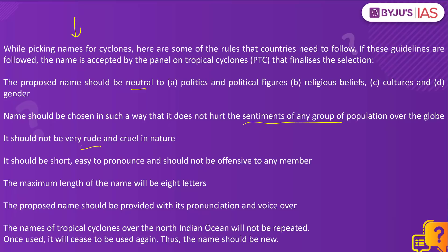The name should not be very rude or cruel in nature. It should be short, easy to pronounce and not offensive to any member. The maximum length of the name will be 8 letters, and the proposed name should be provided with its pronunciation and voice over. One important point relevant for your prelims exam: the names of tropical cyclones over the North Indian Ocean will not be repeated — once a name is used, it will cease to be used again, meaning the name must always be new.